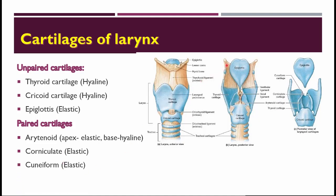We also have two small cartilages: the pair of corniculate cartilages and the cuneiform cartilages. These are mainly seen in the posterior part of the aryepiglottic fold. The thyrohyoid membrane is thickened posterolaterally. You can see a nodular cartilage and a rod-shaped cartilage — on top of the arytenoid you will have the corniculate, and then the cuneiform cartilages.